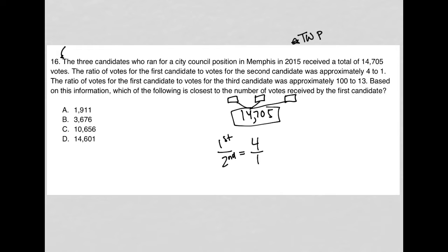The ratio of votes for the first candidate to votes for the third candidate was approximately 100 to 13. So for first to third, it was 100 to 13. Based on this information, which of the following is closest to the number of votes received by the first candidate?